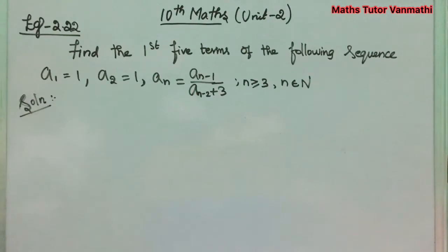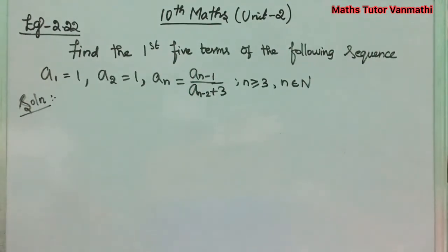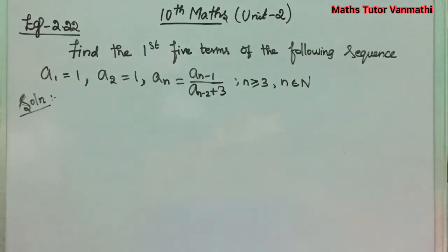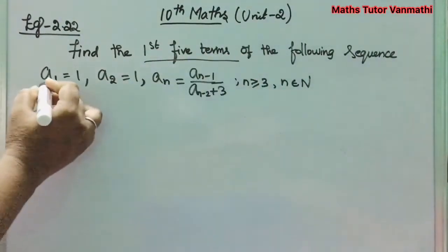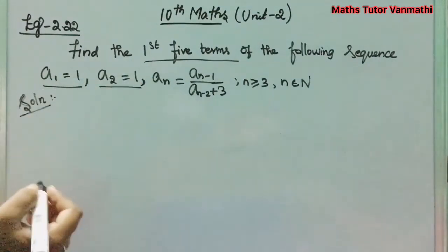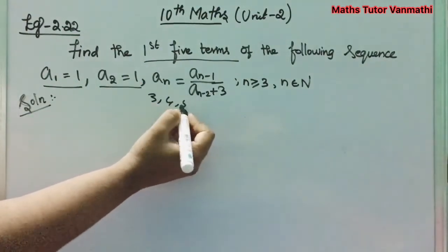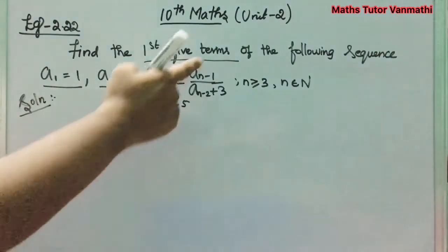Example 2.22: Find the first 5 terms of the following sequence. Given: a_1 = 1, a_2 = 1, a_n = a_(n-1) / a_(n-2) + 3, where n ≥ 3 and n belongs to natural numbers. Already the first and second terms are given, so we need to find the third, fourth, and fifth terms.